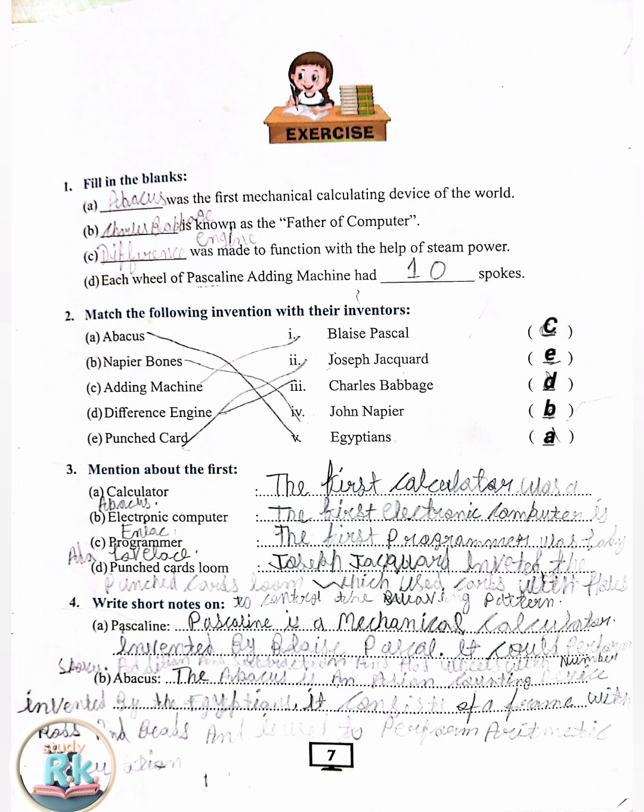D. Difference engine — Answer 3: Charles Babbage. E. Punched card — Answer 2: Joseph Jacquard.